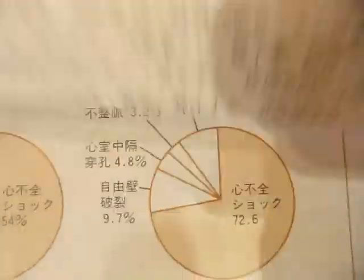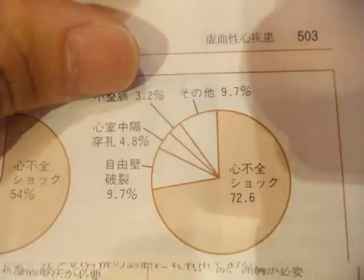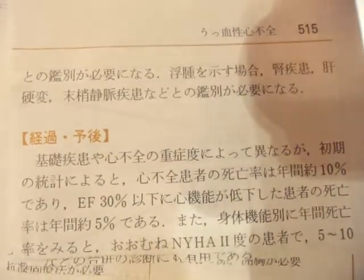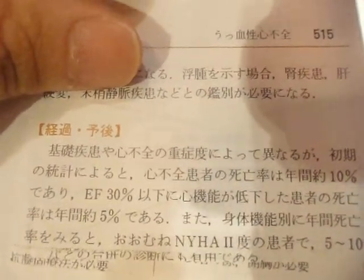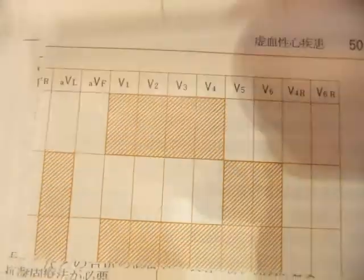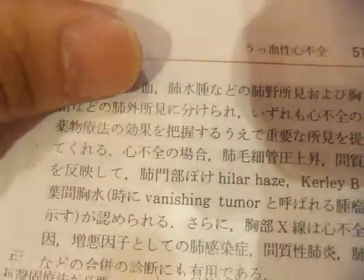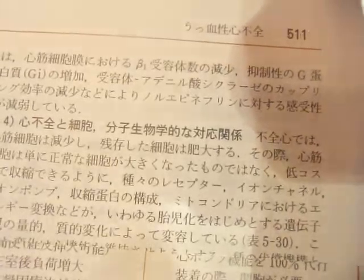Generalized coordinate transformations build a group at the level of fields, but at the level of coordinate maps don't quite form a group. Perhaps this is related to some recent work discussing the possibility of non-associativity in this context.